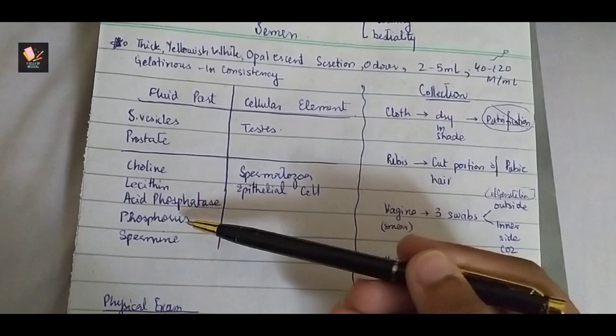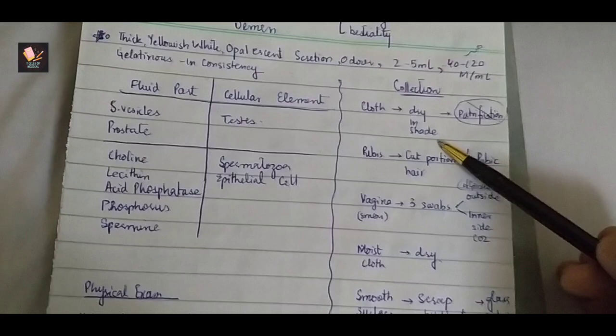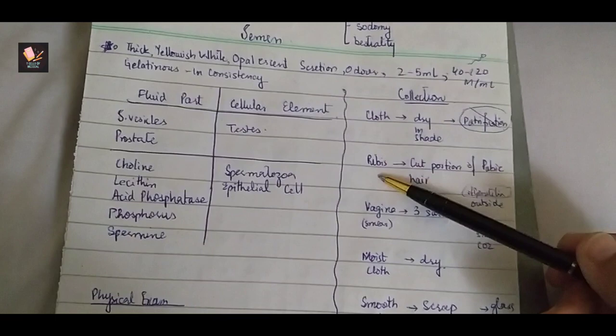Here we have phosphatase, phosphorus and spermatozoa. If we have a collection, then we will do staining. If you have a coat, then you will have a sheet so that it will not be purified.